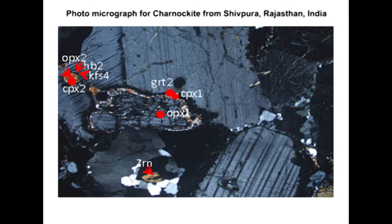Orthopyroxene plus plagioclase gives rise to clinopyroxene plus garnet plus quartz. This reaction was investigated by Ring and Greenwood in 1967, who obtained equilibrium conditions of the reaction at about 700°C between 8 to 10 kilobars. Through this reaction, the pair orthopyroxene-plagioclase is replaced by the pair clinopyroxene plus garnet, and thus plagioclase now coexists with clinopyroxene and garnet. This is the characteristic of clinopyroxene, almandine granulite sub-facies — entirely devoid of hornblende and biotite.